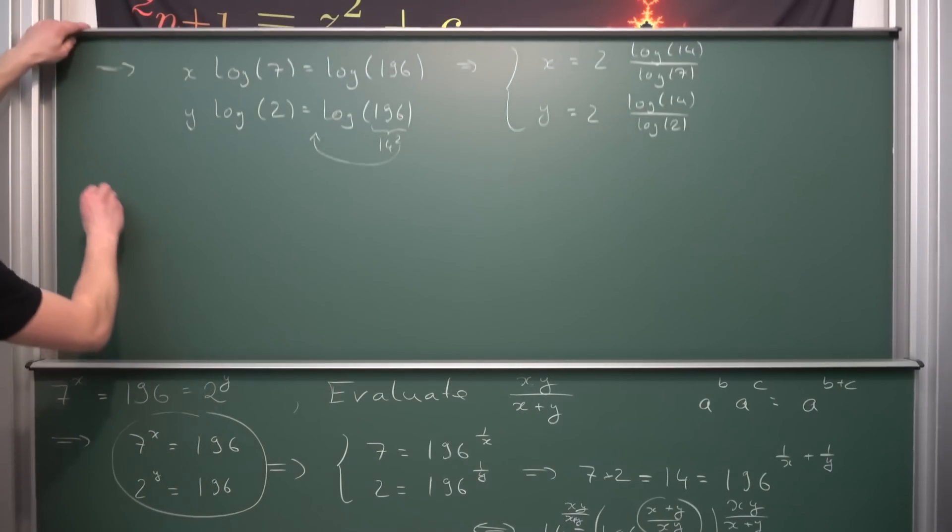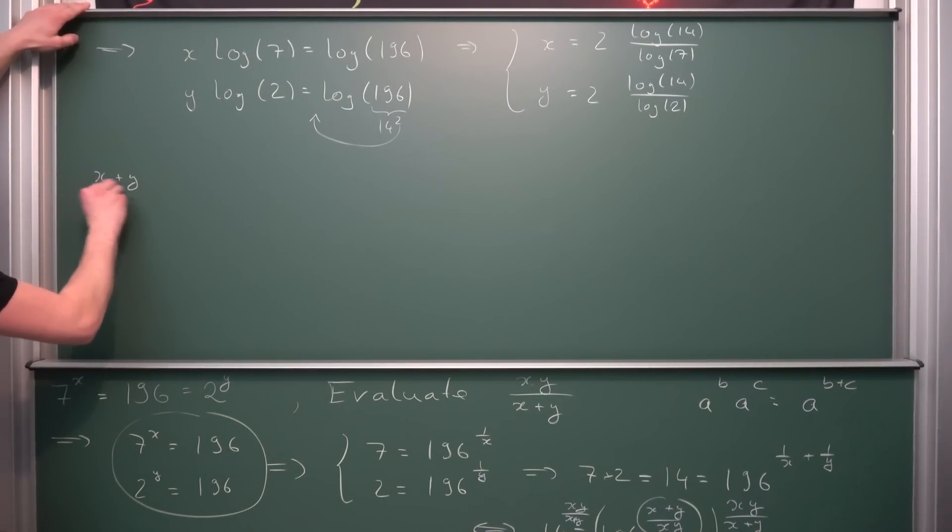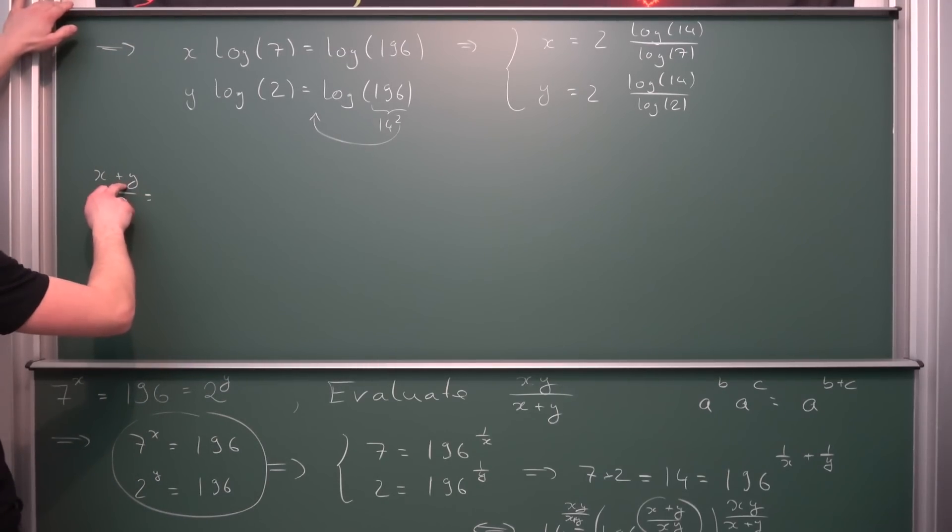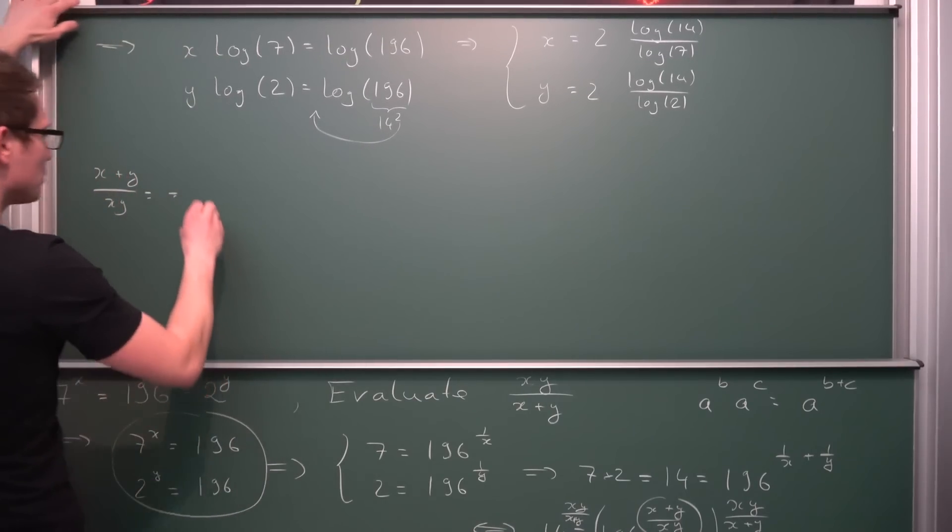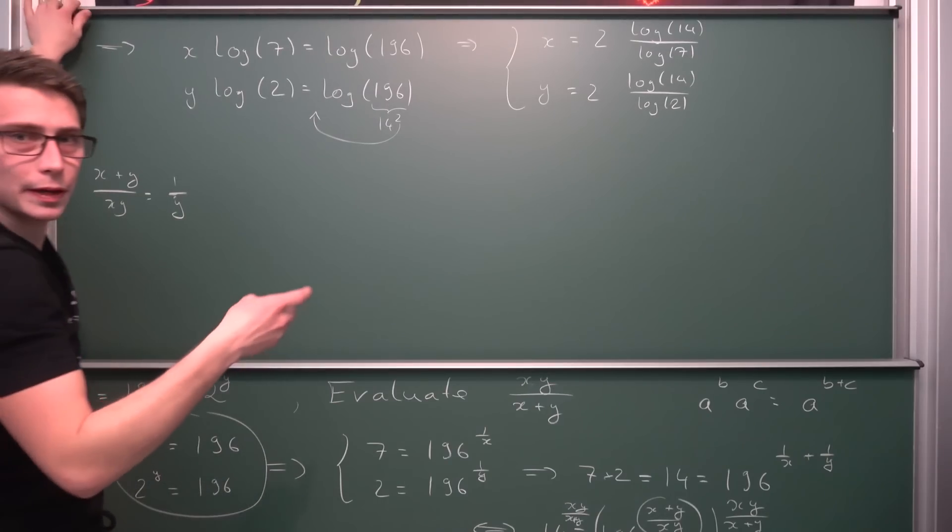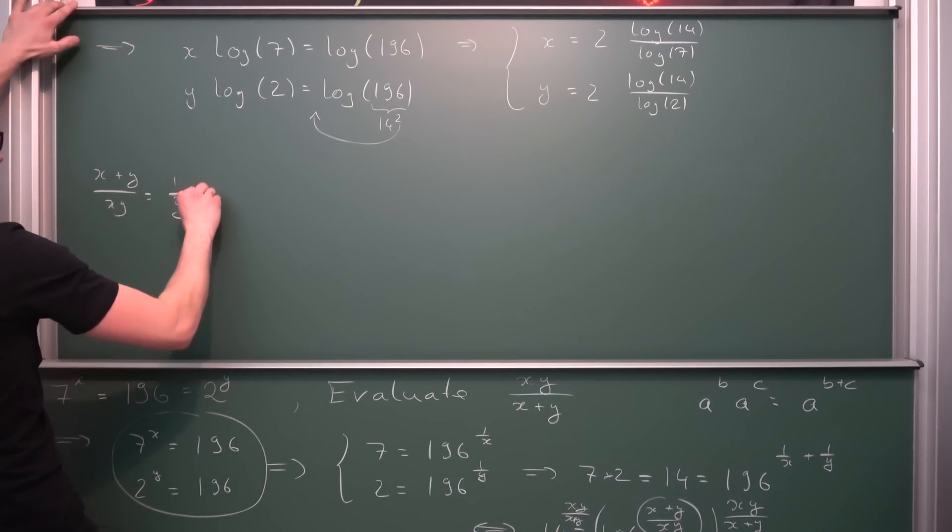If we take a look at the reciprocal we are going to get x plus y divided by xy. And we know what this is if we were to use the additive property of our numerator. We are going to get x divided by xy which is the same as 1 over y. And also y divided by xy is going to give us plus 1 over x.